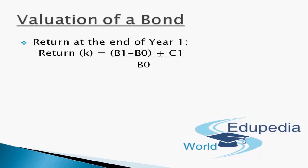So if today the current price is rupees 100 and after one year the value of the bond is rupees 110, we will be getting a capital gain of rupees 10 plus a coupon interest of 10% of the face value, that is rupees 10. So 10 plus 10 divided by 100 gives us a return of 20%.